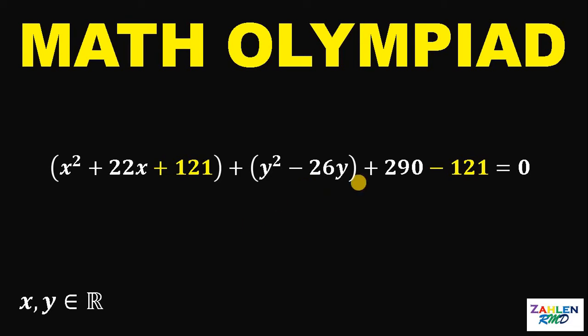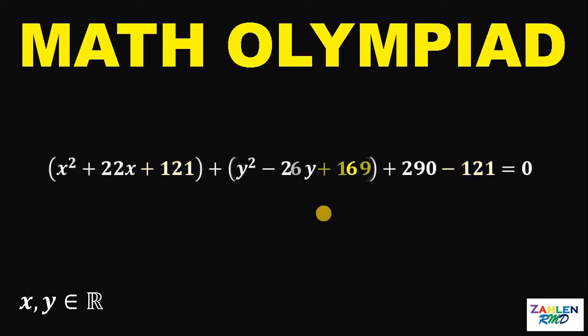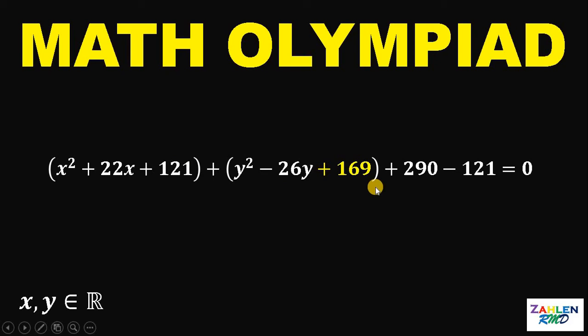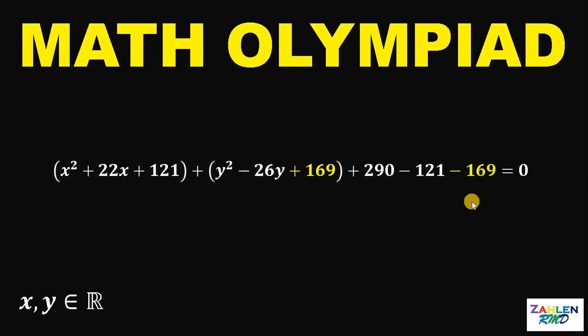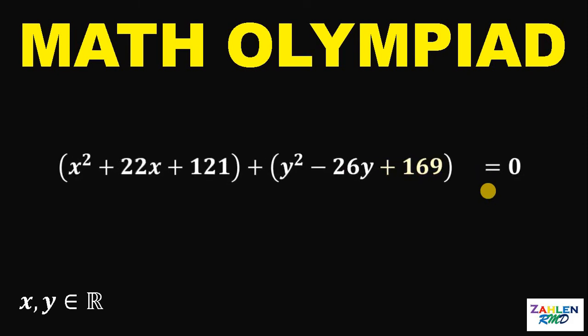Then, negative 13 squared will give us 169. So, let's add 169 and don't forget to subtract 169 to make it balanced. Now, 290 minus 121 minus 169 is just 0.